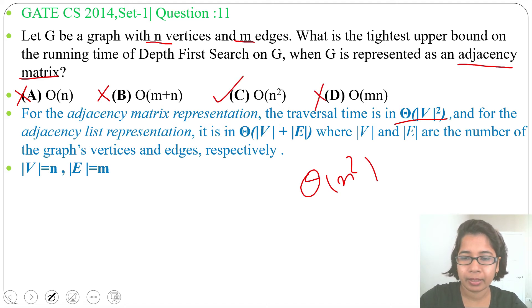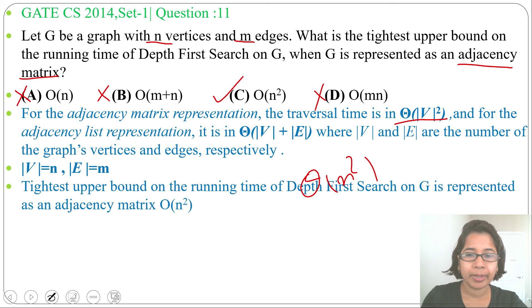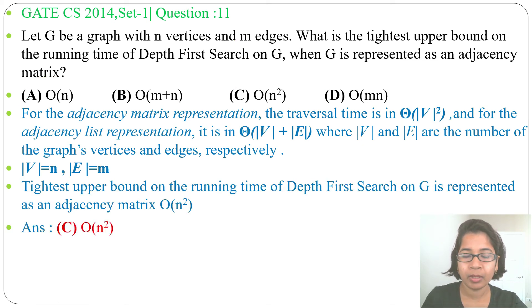Option D, Big O of mn, this is wrong. So answer will be Option C, Big O of n square. For Depth First Search and Breadth First Search, running time is same. In case of adjacency matrix representation, it is Theta of number of vertices square. And in case of adjacency list representation, it is Theta of number of vertices plus number of edges.